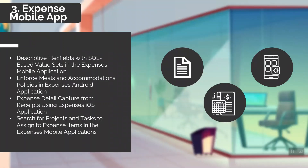Meal and accommodation policies in expenses for Android. Android users can now perform the same validations based on company policy. If your company policy permits submission of expenses with policy violations, you can provide a justification in the mobile app. If the company policy does not allow an expense report submission with policy violations, you cannot submit an expense item and must correct the expense details.